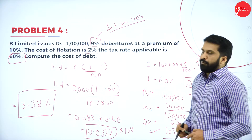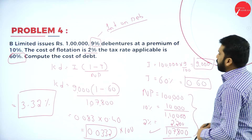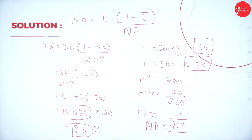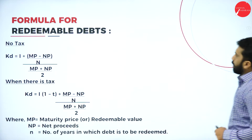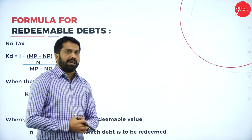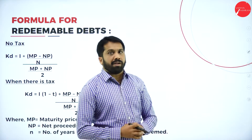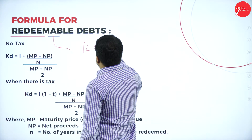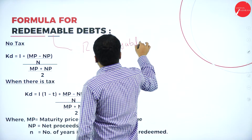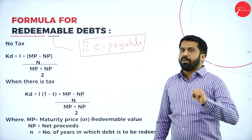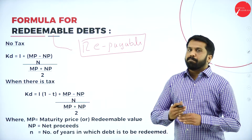Now before we go to the next concept, we are still doing debenture but we are talking about redeemable debenture. Redeemable means repayable. If it is irredeemable, the formula is small. For redeemable, the formula will be a little bigger.